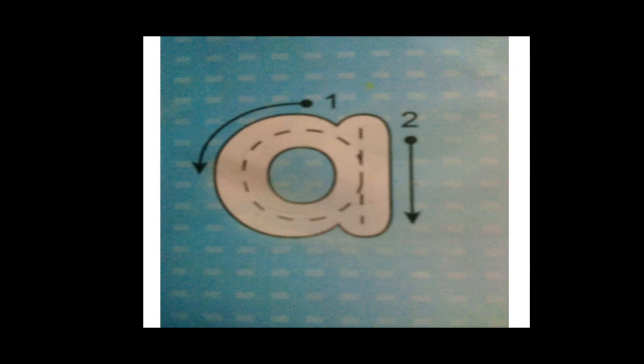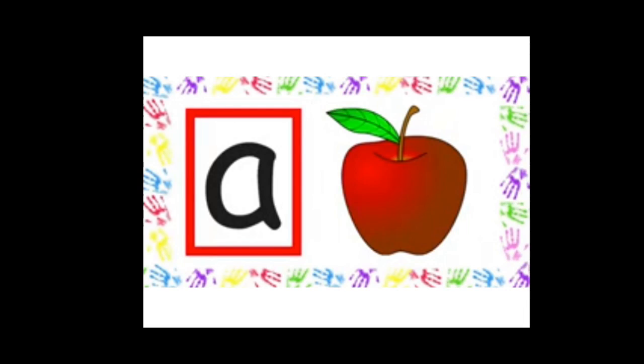This is A. The formation of A is: firstly we will curve like this, okay, and straight slant. Curve like this and straight slant. Okay, straight line. Here we will learn firstly the sound of letter A, then writing.